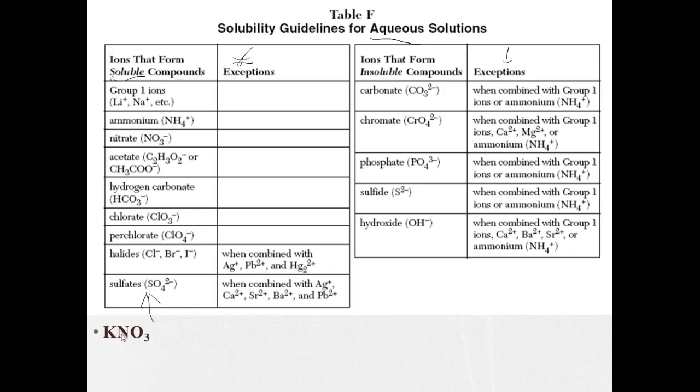Let's see here. Potassium nitrate, KNO3. Well, when we look on here, we have NO3 nitrate is always going to be soluble. So based on that, it's going to be soluble. Also, group 1 ions form soluble compounds with no exceptions. So KNO3 will be soluble.